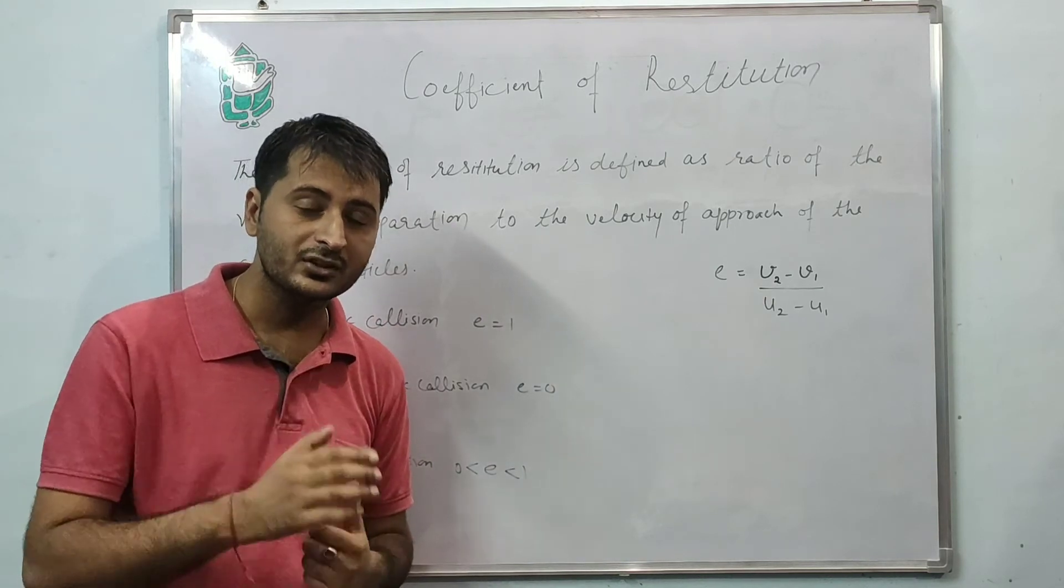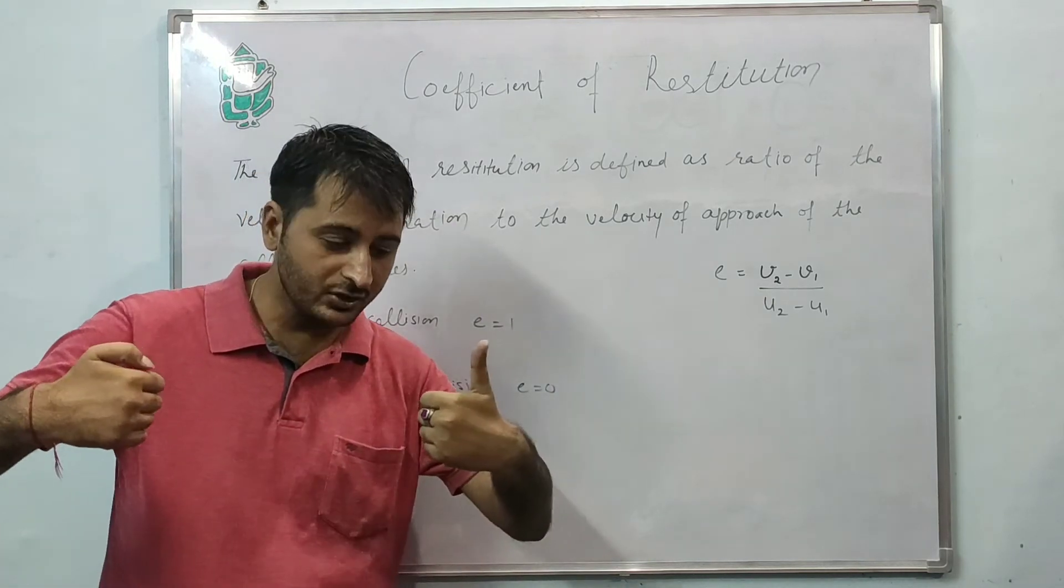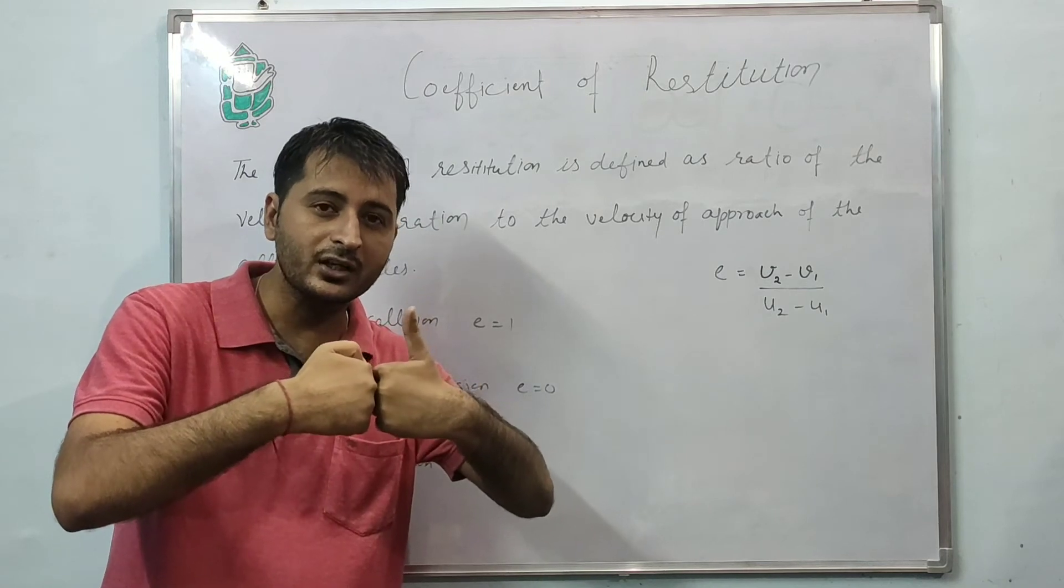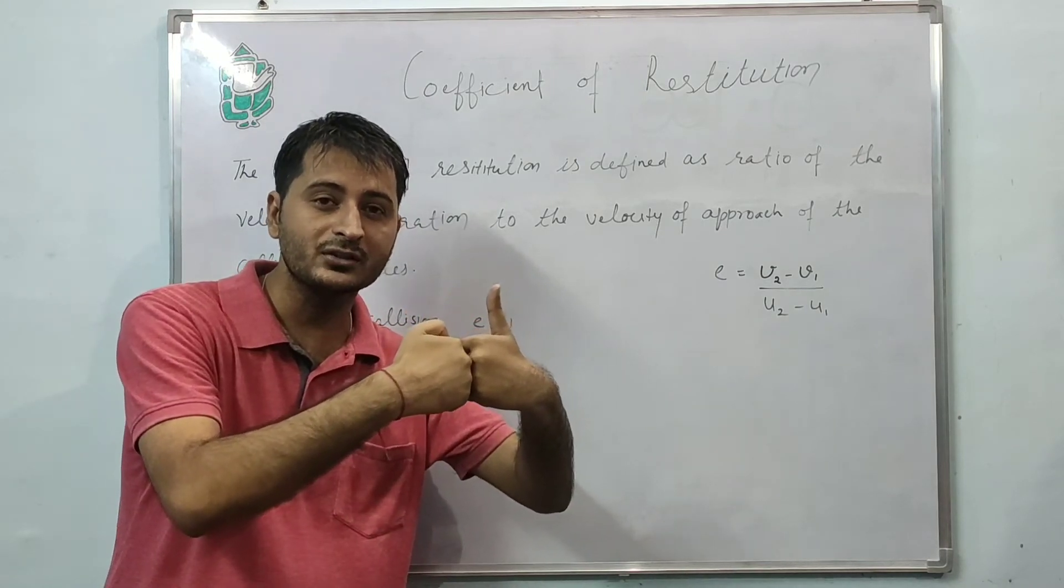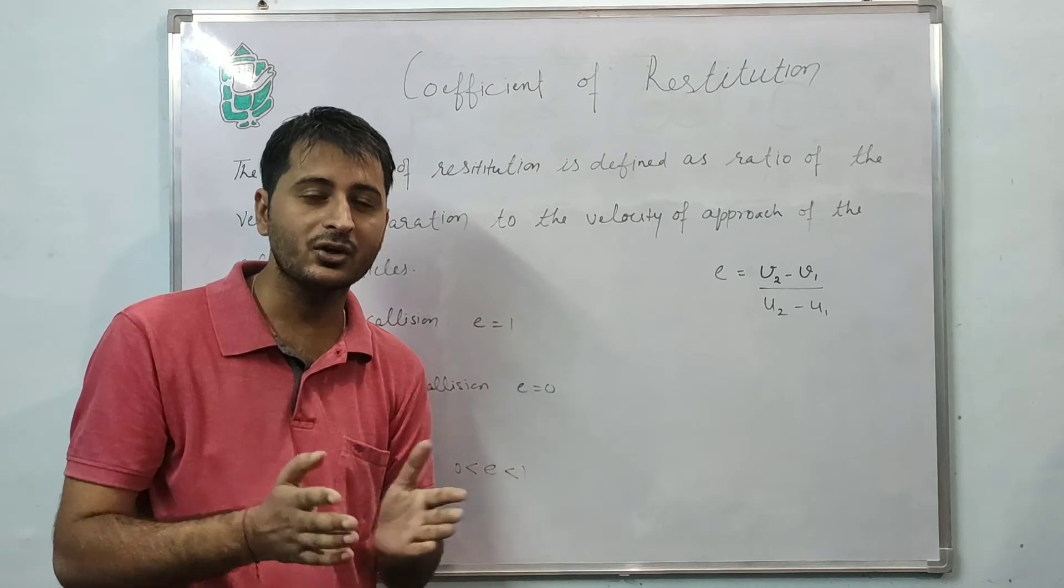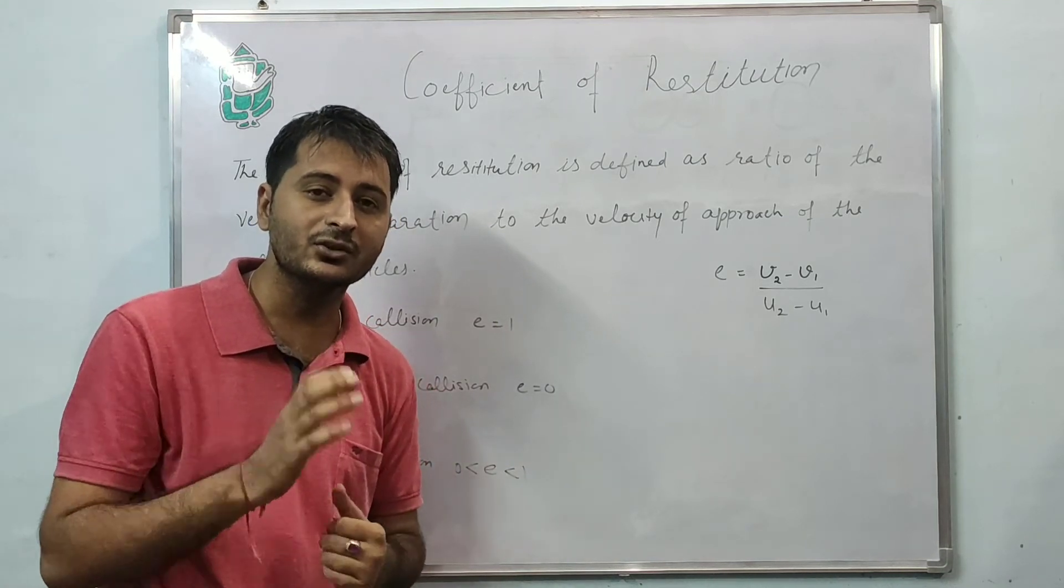When v2 equals v1, it means both bodies stick together and move with the same velocity. This is called a perfectly inelastic collision.